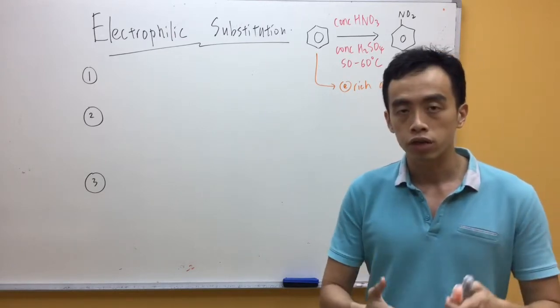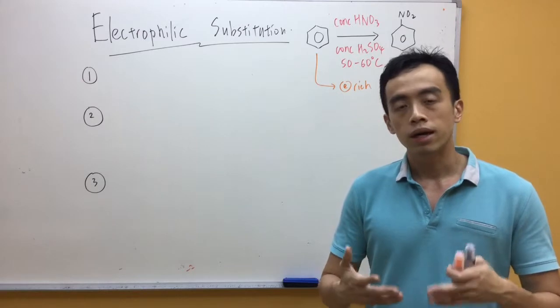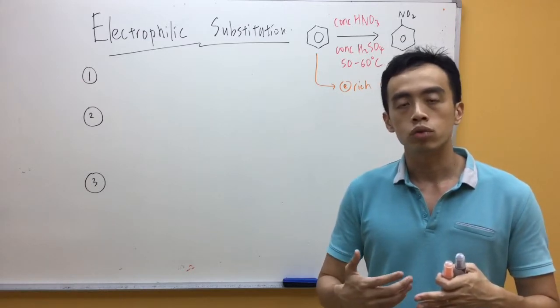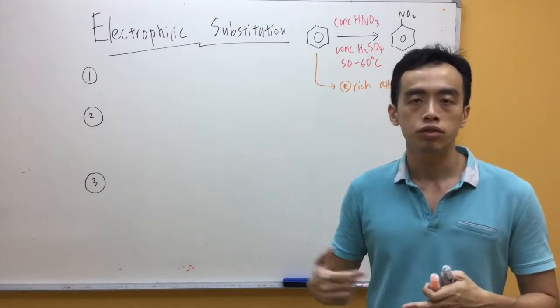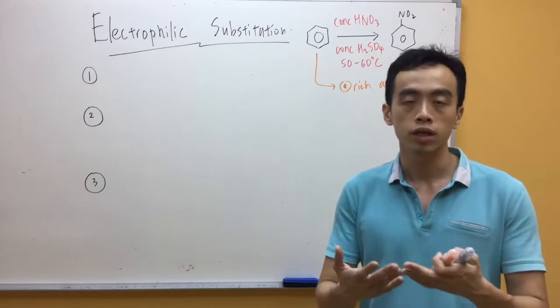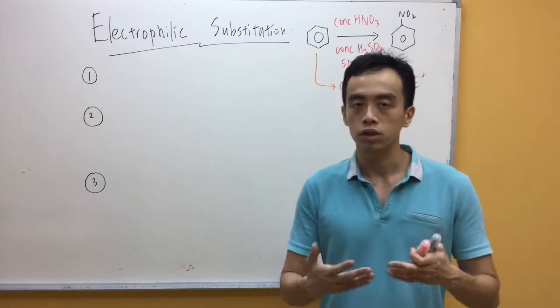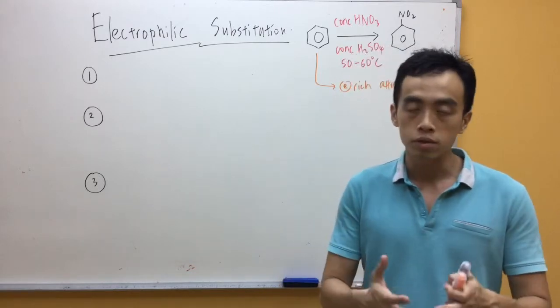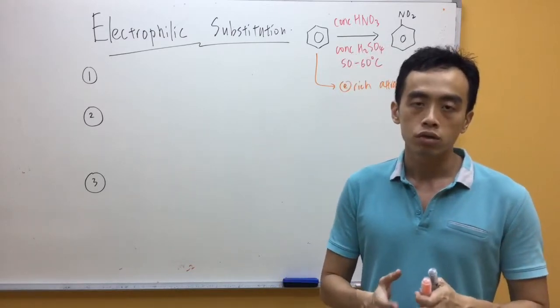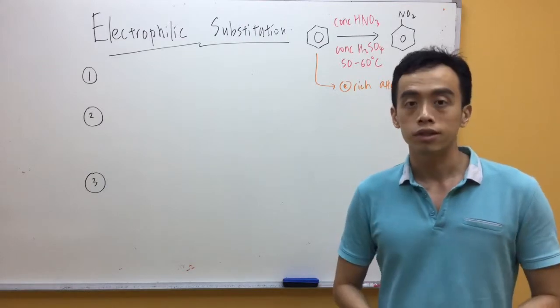Now, if benzene undergoes addition reaction, then the pi electrons that are involved in the delocalization will be used for bonding, and so benzene will lose this resonance stability, which it doesn't want. So benzene prefers substitution reaction so that it can retain the resonance stability.